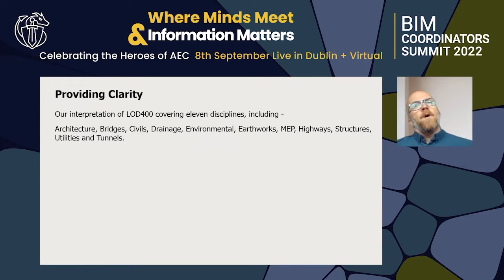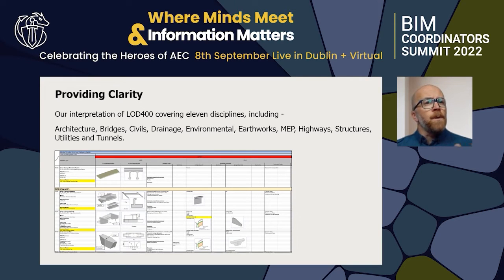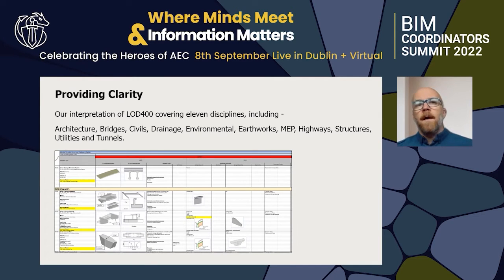Our interpretation of LOD 400 covers 11 disciplines, from architecture all the way through to tunnels. What we've undertaken is to graphically define each component — what it looks like and the information it holds, and also what information we can extract from these objects. More and more, our contractors extract information: they want volumes, how much concrete there is, how many piers, how many parapets, how many types of beams. Without a standard baseline, there's no way we could achieve that.